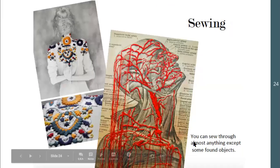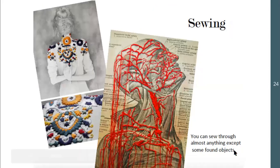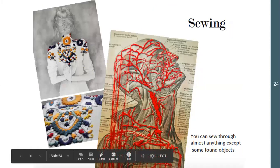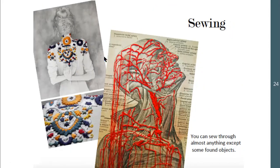Sewing can also be fun — you can sew through almost anything except some found objects. If you're intrigued by the sewing idea, I would recommend getting a canvas. For basic art materials, I get most of mine at Dollarama. I don't really believe in spending a lot of money at Michael's for the basics. If you really want to do something on canvas, go to Dollarama and pick up a canvas — they're pretty cheap there.